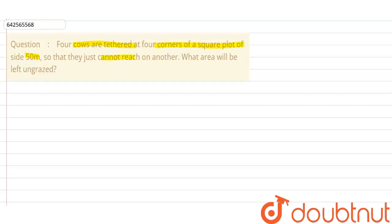So first let us draw the diagram. Here it is said that there is a square plot so we are drawing a square plot. Now in this square plot let us name them as A, B, C and D.